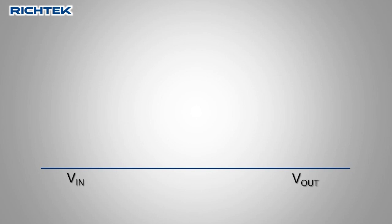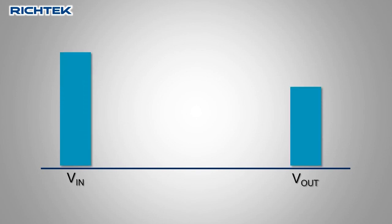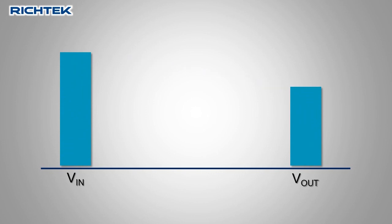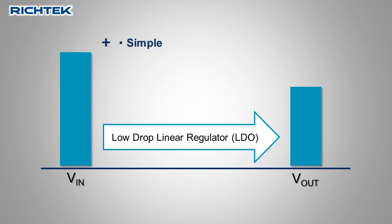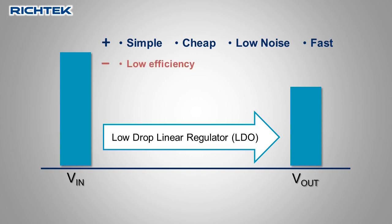If you need to drop a higher input voltage to a lower output voltage at relatively moderate power levels, you can use a low dropout linear regulator. LDOs are simple, cheap, and provide a clean low noise supply. They can also react quickly to load transients. However, they have low efficiency and the power dissipation in the device can lead to thermal limitations.